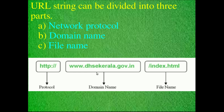The three parts of a URL are: first, the network protocol; second, the domain name; and third, the file name. These are the necessary parts. For example, when you type in the browser address bar, the first part is the protocol such as HTTP, followed by colon slash slash, then the domain name.